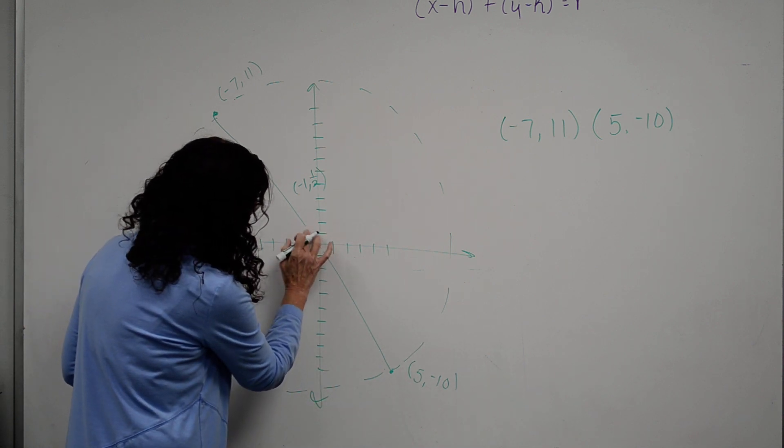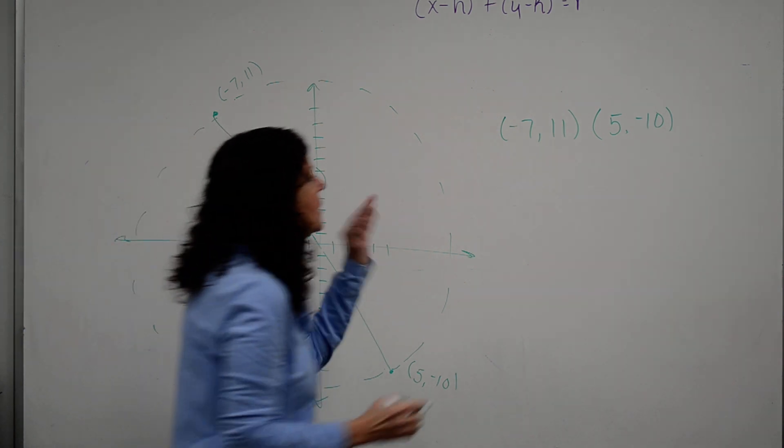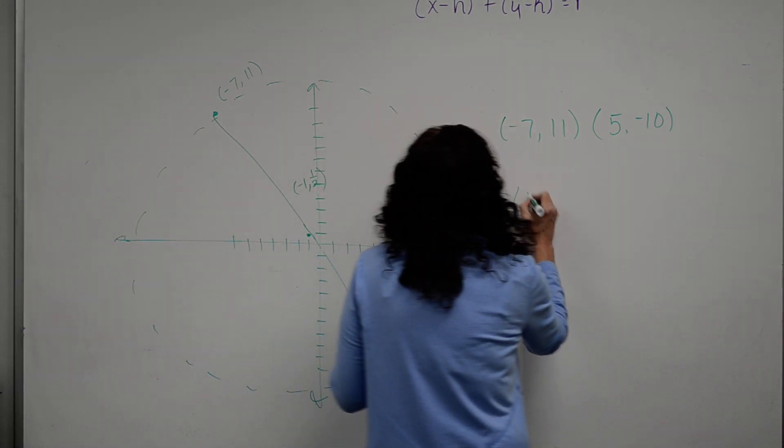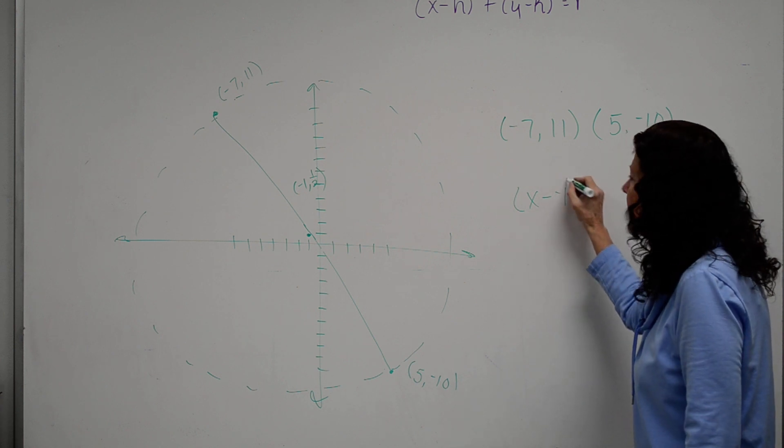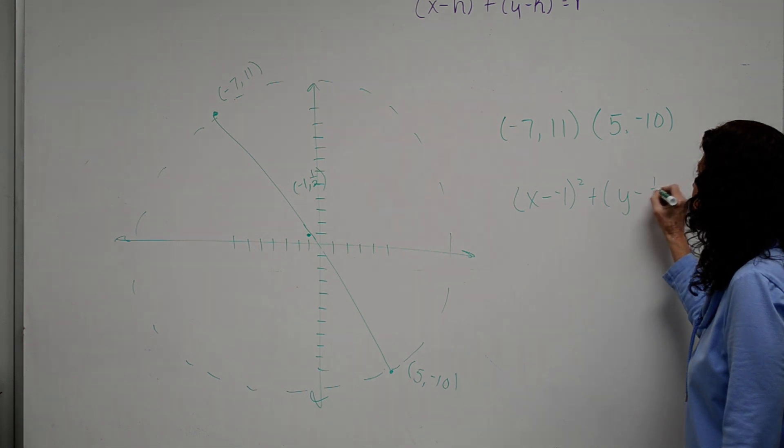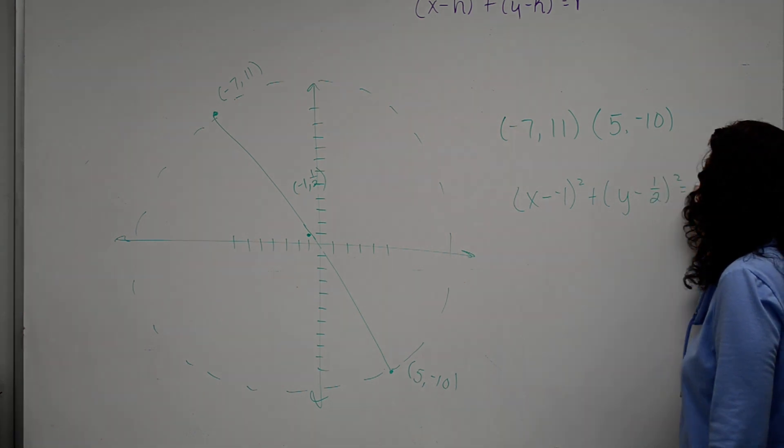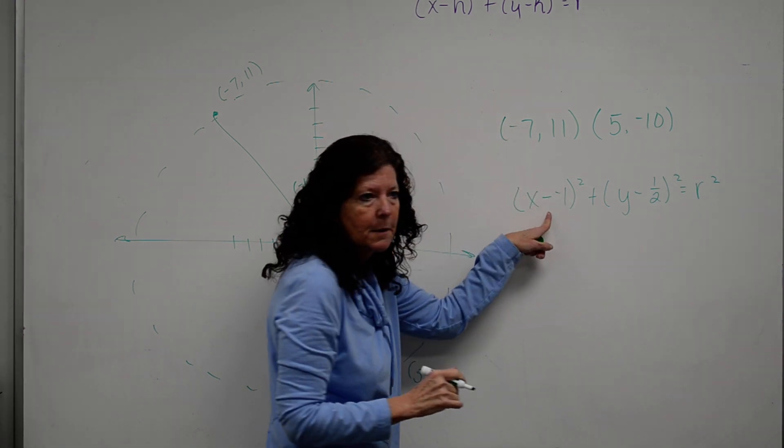That's going to be my center point. So, basically, I'm talking kind of right there. Okay? So, I've got part of this. I've got x minus, and I'm just plugging in, x minus a negative 1 squared plus y minus 1 half squared equals radius squared. Okay? The only thing that changes here is that becomes plus, right?